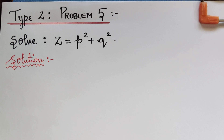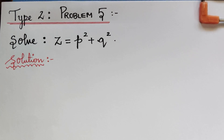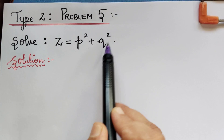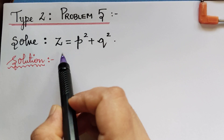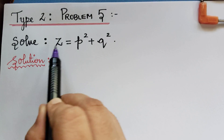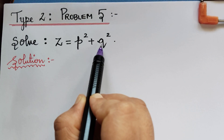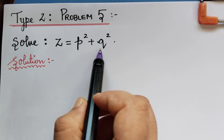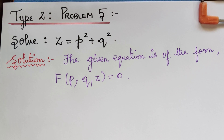Dear students, under the topic non-linear partial differential equations, we are solving problems under standard type 2. Here we have problem 5. The question is z equal to p square plus q square. We see that only p, q, and z are present explicitly, and so the given equation is of the form F of p, q, z equal to 0.